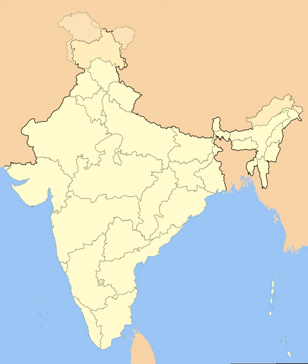The Indian subcontinent has been ruled by many different ethnic groups throughout its history, each instituting their own policies of administrative division in the region. During the British Raj, the original administrative structure was mostly kept, and India was divided into provinces that were directly governed by the British and princely states which were nominally controlled by a local prince or rajah loyal to the British Empire, which held de facto sovereignty over the princely states.